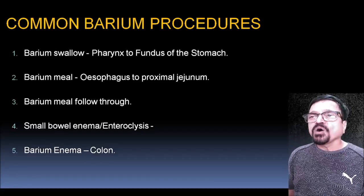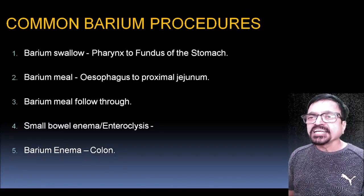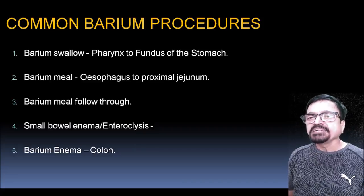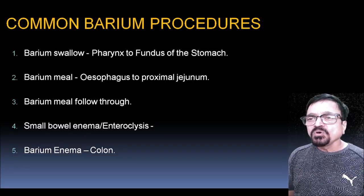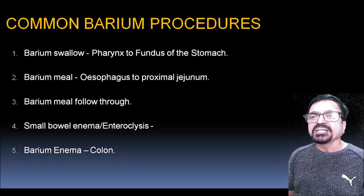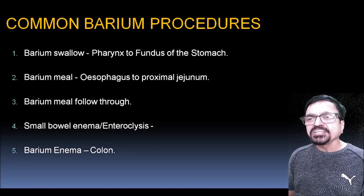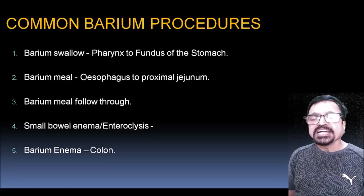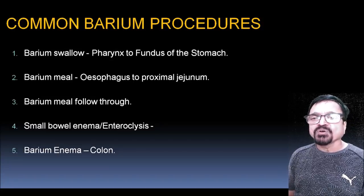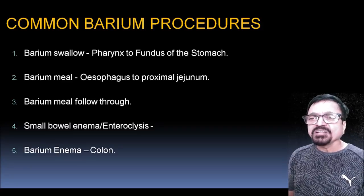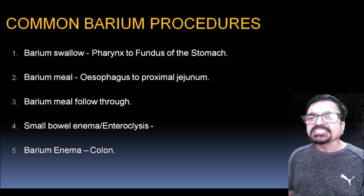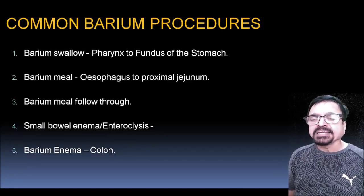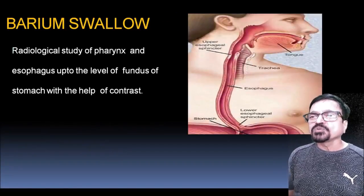Common barium procedures: barium swallow covers pharynx to fundus of the stomach including the entire esophagus. Barium meal covers esophagus to proximal jejunum including the esophagogastric junction, stomach, and duodenum. Barium meal follow-through covers distal jejunum, ileum, ileocecal junction, and a portion of ascending colon. There is also small bowel enema (enteroclysis) and barium enema for the colon. Today's topic is the barium swallow.